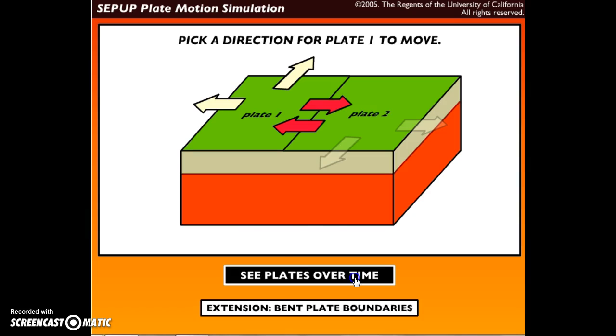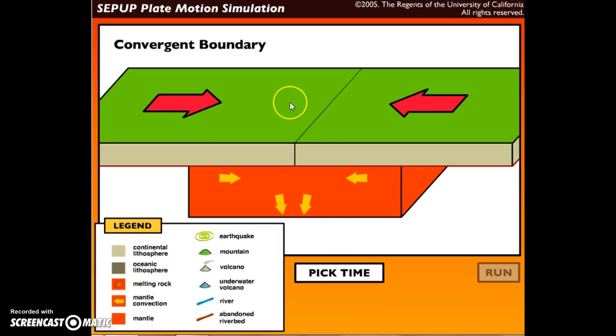We're going to see the plates over time. This is our convergent boundary - the plates are colliding together. You see the arrow on the left is pointing toward the arrow on the right and the arrow on the right is pointing toward the arrow on the left. Make sure you're looking at the legend and you understand all the aspects.